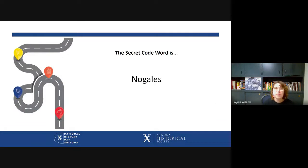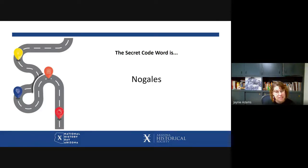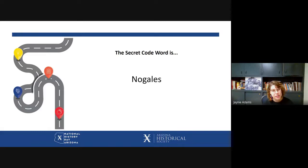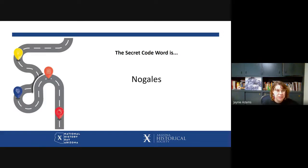If you're filling out your roadmap at home, the secret code word for today's session is 'modality.' This is actually the last workshop that has a secret code word. If you're competing in National History Day this year, you have until December 1st to send your completed roadmap to the National History Day in Arizona email address — that's NHDAZ at AZHS dot gov — and we'll give you a special treat at the state awards ceremony.